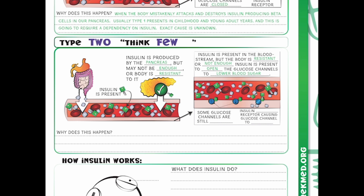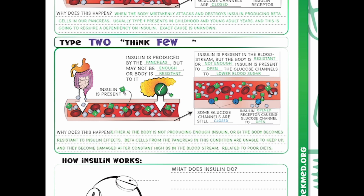We can see our blue glucose channels, but only one of them is open because there's only one insulin receptor binding to open the glucose channel. Some glucose channels are still closed. Why does this happen? Either the body is not producing enough insulin, or the body becomes resistant to the insulin effects. Beta cells from the pancreas are unable to keep up and become damaged after constant high blood sugar — this can be related to poor diets. This is actually the most common type of diabetes and usually happens in later adulthood.